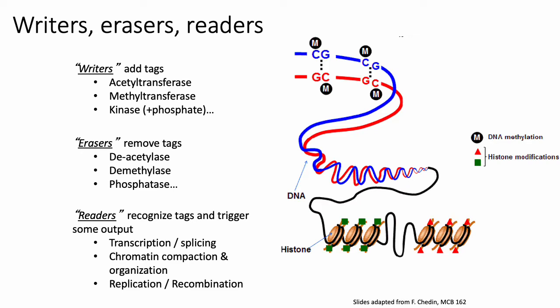Most genomes encode entire families of enzymes that can either add or remove different epigenetic marks. Enzymes involved in adding epigenetic marks like acetyl groups or methyl groups are termed acetyltransferases or methyltransferases, whereas those responsible for removing those tags are generally called deacetylases or demethylases.